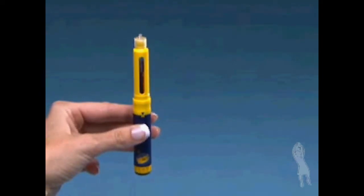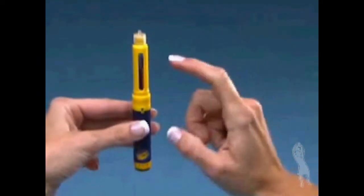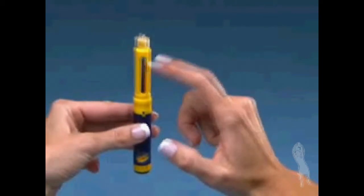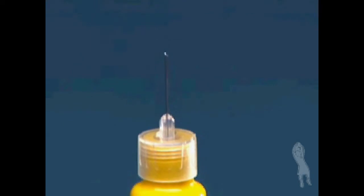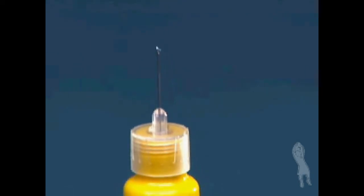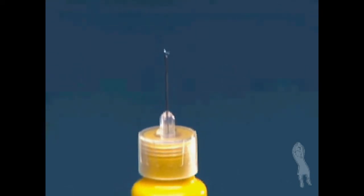Hold the Follistim Pen with the needle pointing upwards. Tap the cartridge holder gently with your finger to help air bubbles rise to the top of the needle. Look for a droplet forming at the tip of the needle. If you see a droplet, go on to the next step.